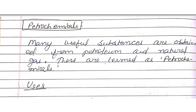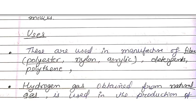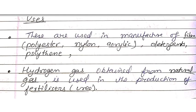Petrochemicals: many useful substances are obtained from petroleum and natural gas, and these are termed petrochemicals. They are used in the manufacture of fibers like polyester, nylon, and acrylic, as well as detergents and polythene. Hydrogen gas obtained from natural gas is also used in the production of fertilizers.